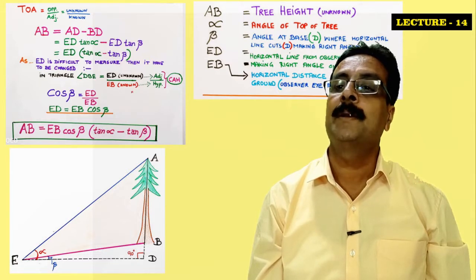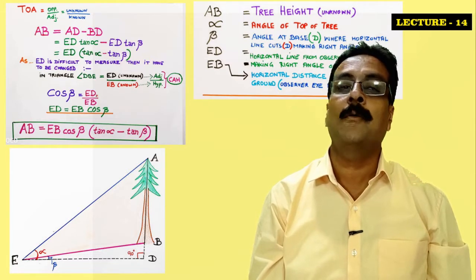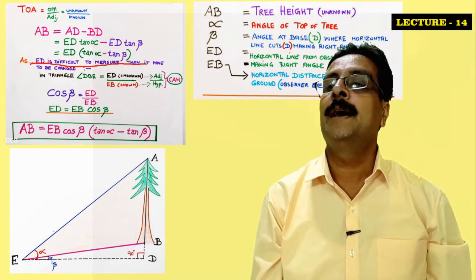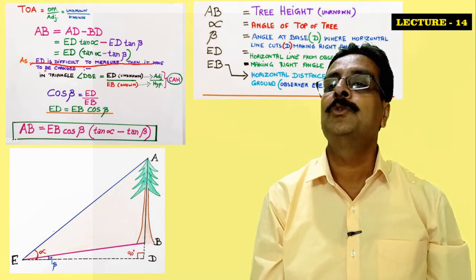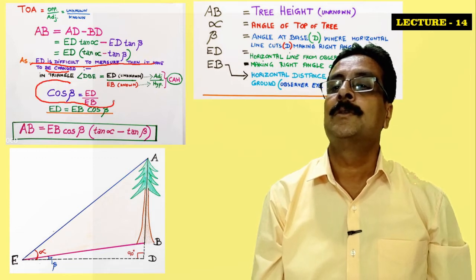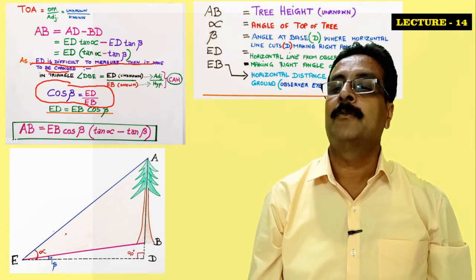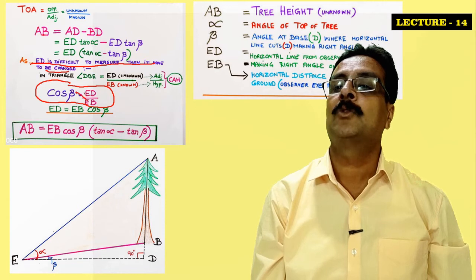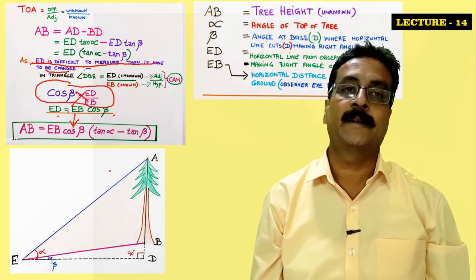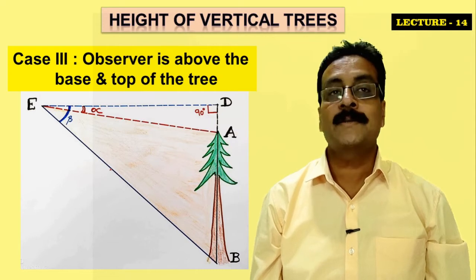To summarize Case 2: ED is difficult to measure directly, so we convert it using cos(beta). By cross-multiplying cos(beta) = ED/EB, we get ED = EB·cos(beta), and substituting this value gives us the height of the tree.